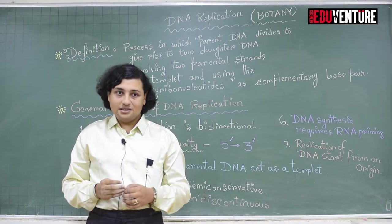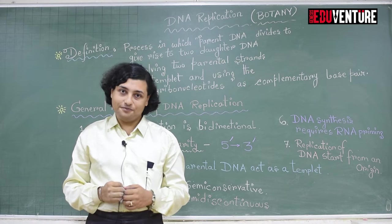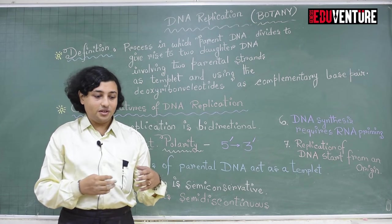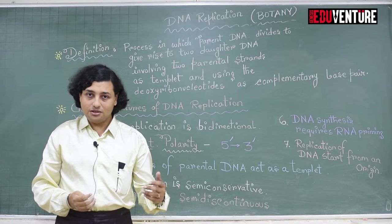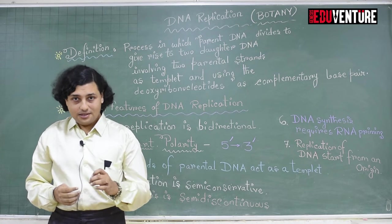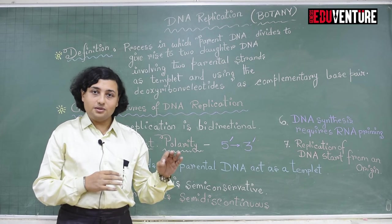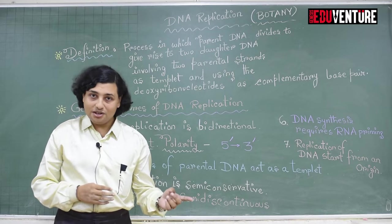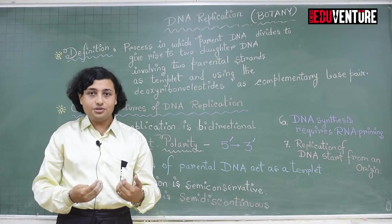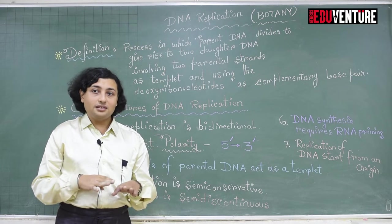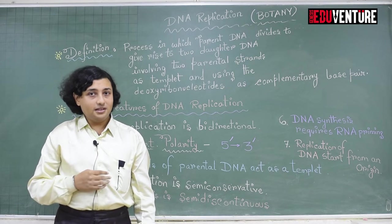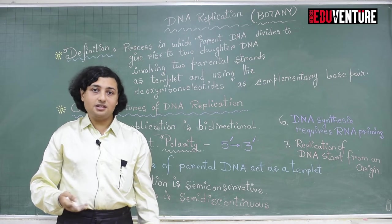DNA serves as the blueprint of life. Therefore, it is very essential that when two daughter cells are formed during cell division, this information should also get distributed to these cells. The DNA present within a parent cell destined to undergo division should also divide, increasing its content to double, so that daughter cells contain equal amounts of DNA and information to regulate their characteristics.